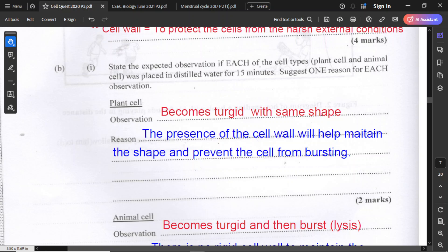The reason for that is the presence of a cell wall. The cell wall helps to maintain the shape and prevent the cell from bursting.